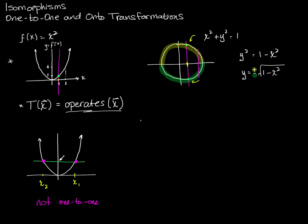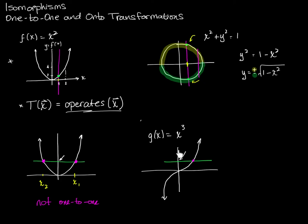An example of a function that is one-to-one is g(x) = x³. That graph passes the horizontal line test — every single y comes from only one x, unlike x², where every single y may have come from more than one x. So x² is not one-to-one, but x³ is one-to-one. That's the general idea of one-to-oneness.